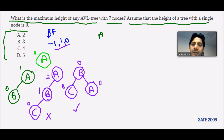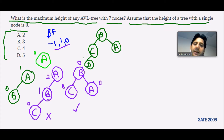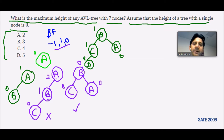Now inserting one more node D to the left of the tree. The balancing factor of the leaves is zero, and going up: one minus zero is one, and two minus one is one. The tree is still a balanced AVL tree.